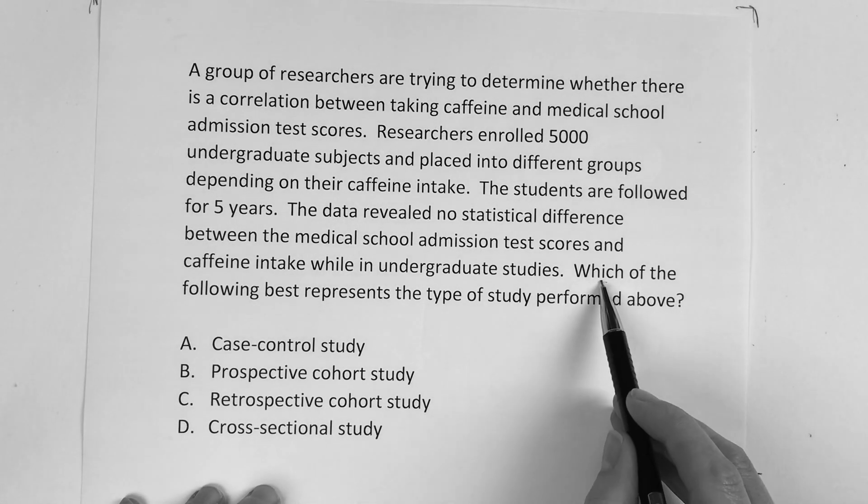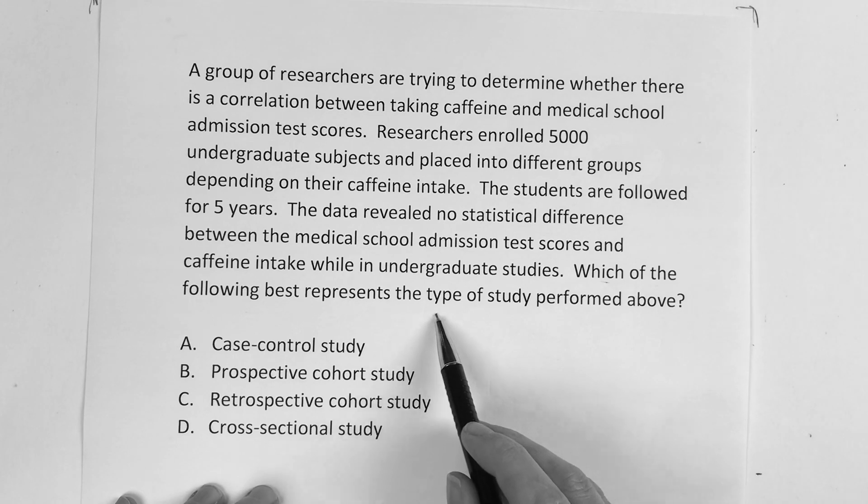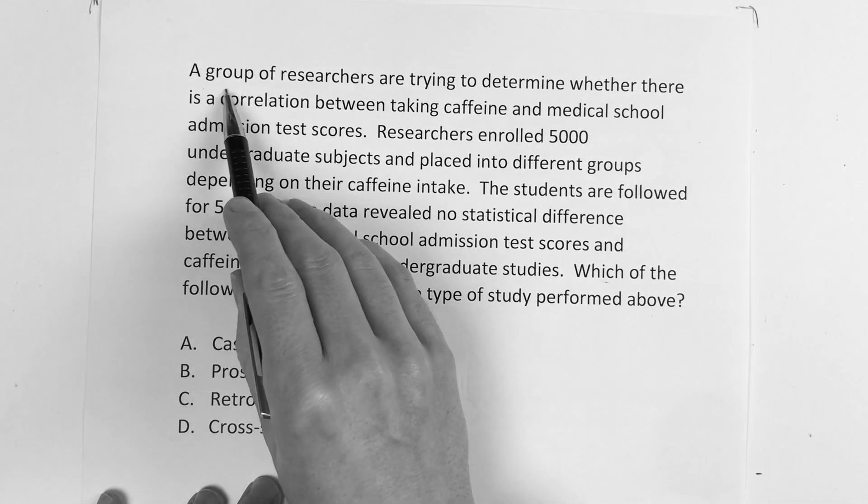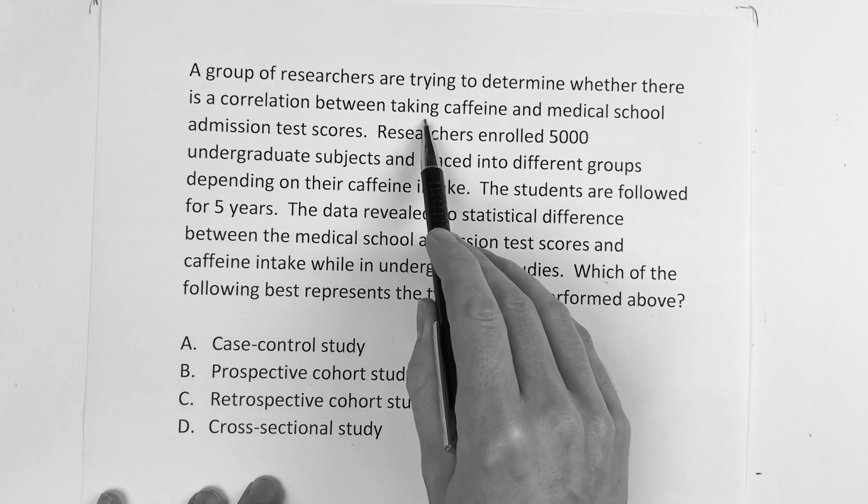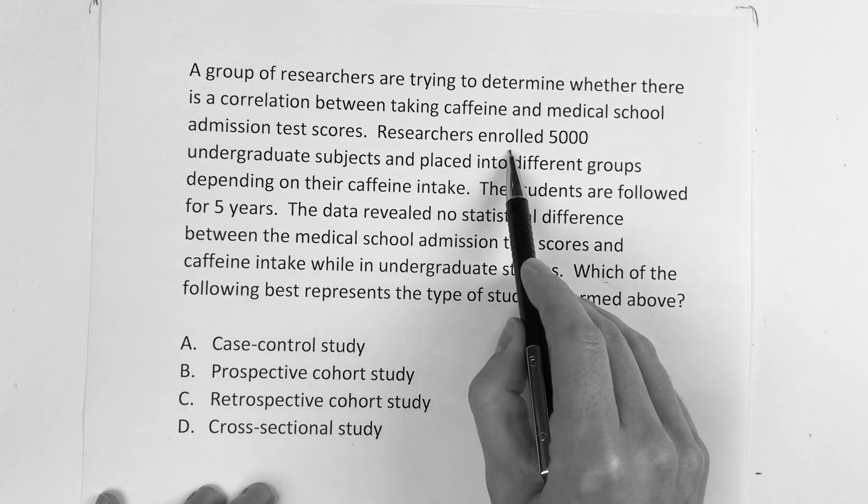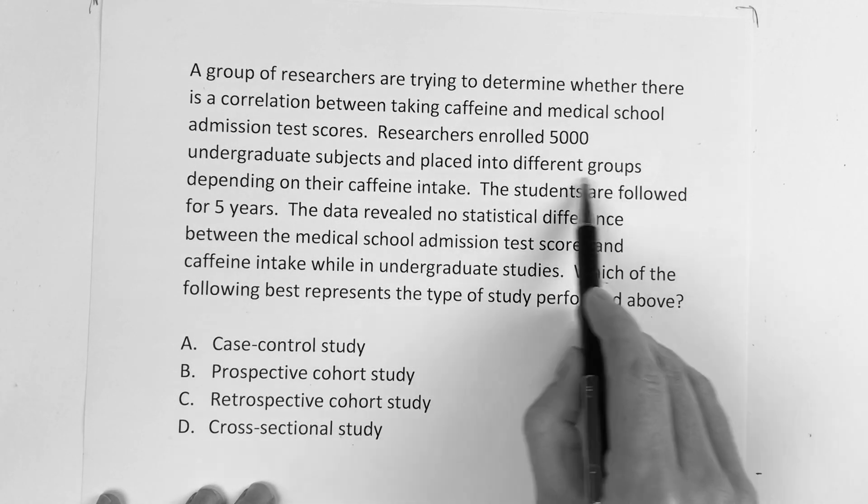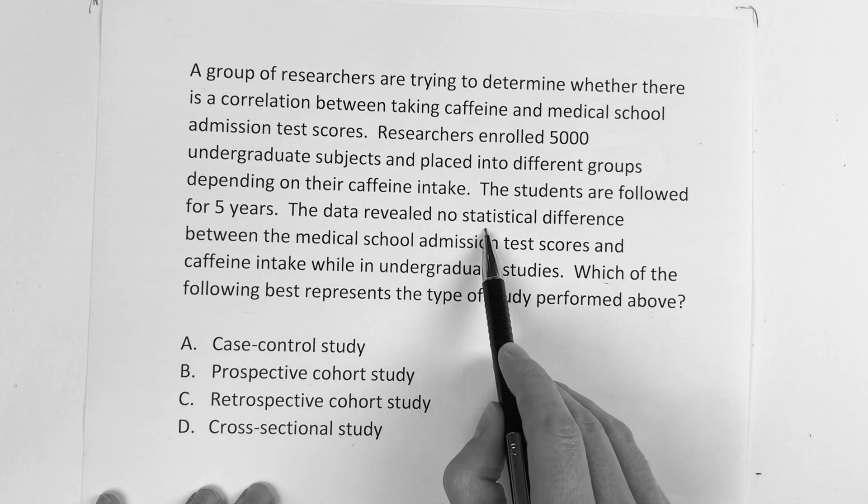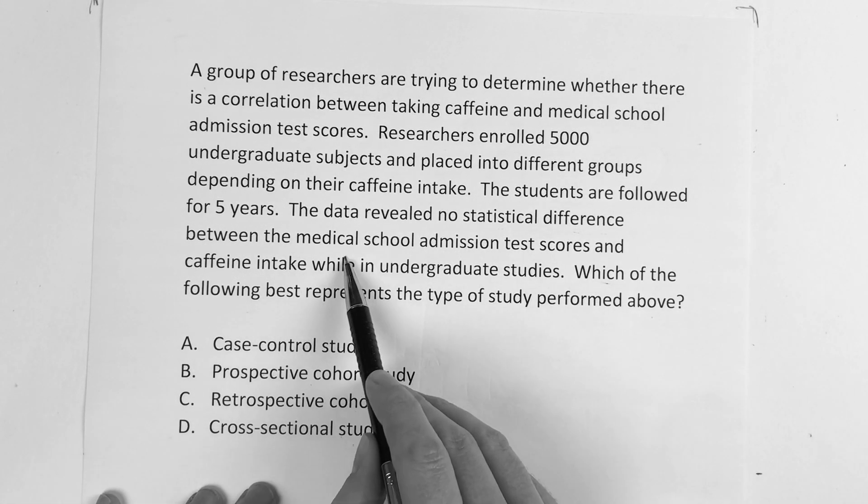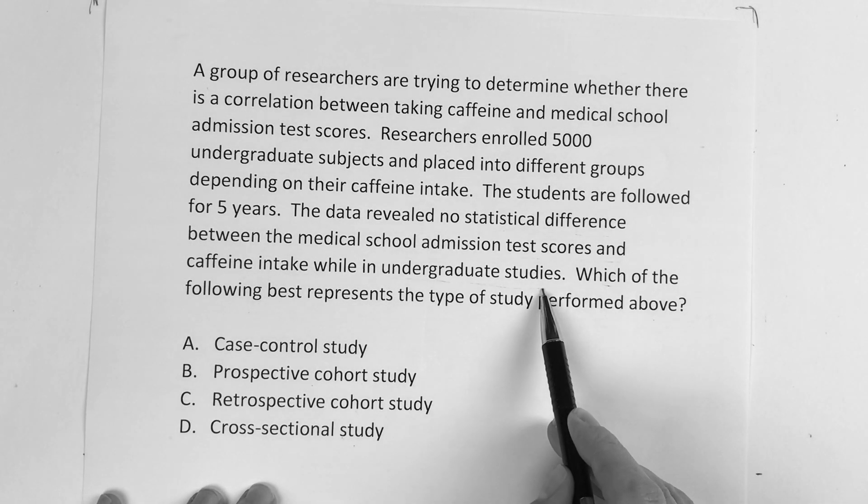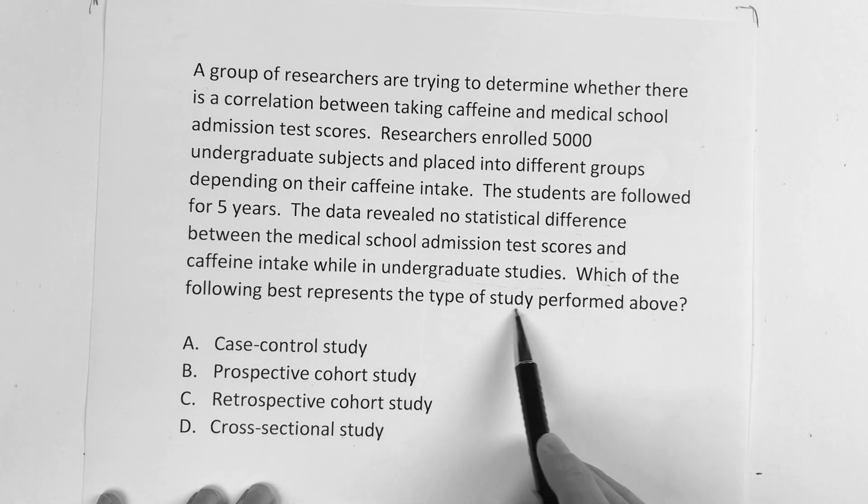This one says which of the following best represents the type of study performed above? It reads: a group of researchers are trying to determine whether there is a correlation between taking caffeine and medical school admission test scores. Researchers enrolled 5,000 undergraduate subjects and placed them into different groups depending on their caffeine intake. The students are followed for five years. The data revealed no statistical difference between the medical school admission test scores and the caffeine intake while in undergraduate studies. Which of the following best represents the type of study performed?